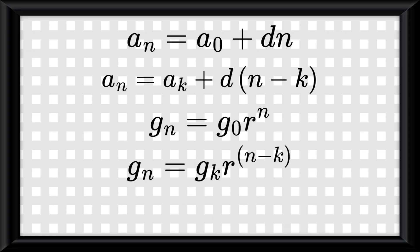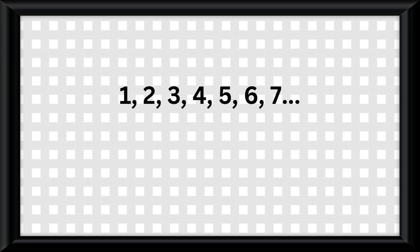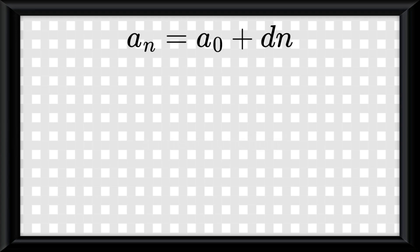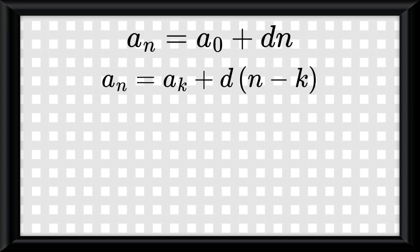So anyway, though I don't really like these equations, they do tell us some stuff. An arithmetic sequence is really just a linear function, and we see that in its equations, as the form a sub n equals a sub 0 plus d times n is really just the equation y equals b plus mx, which is the linear function equation.